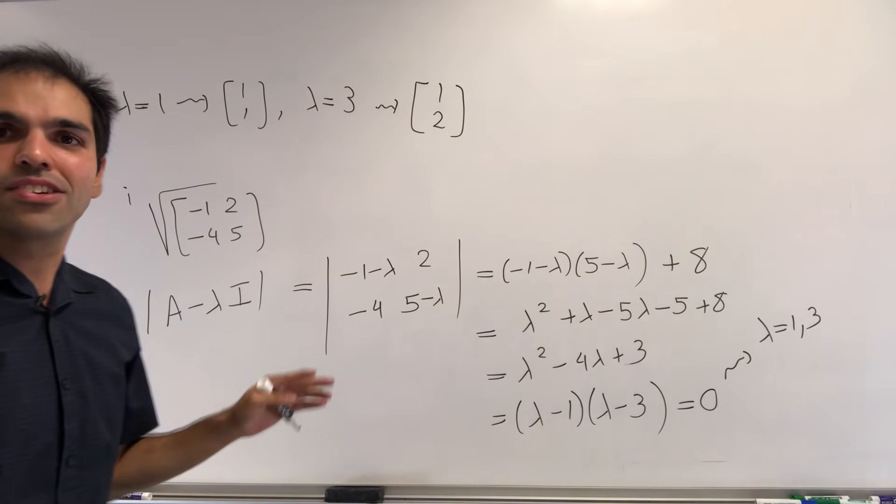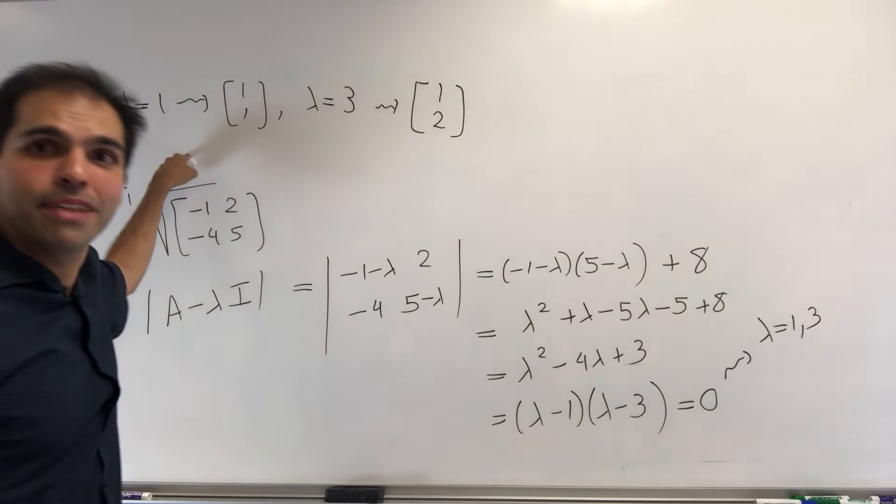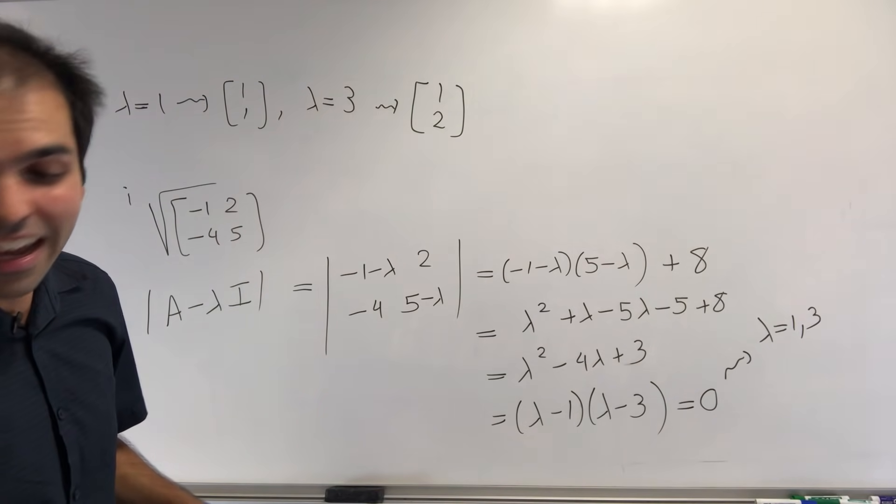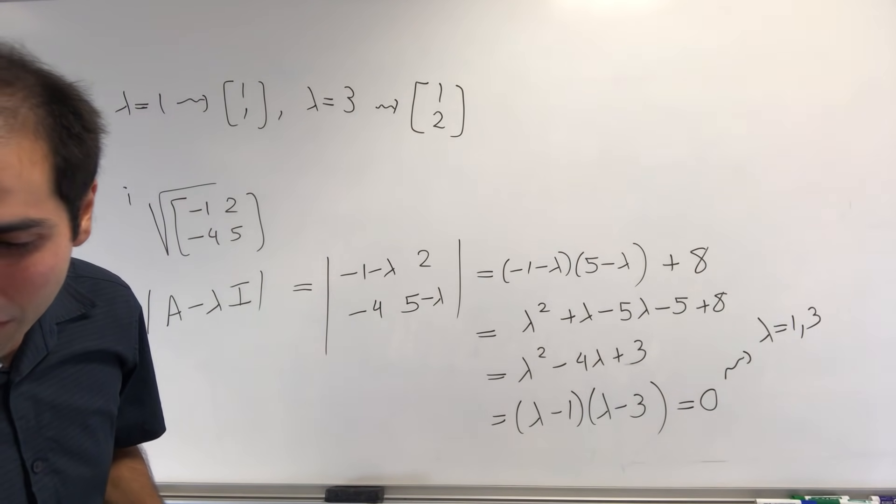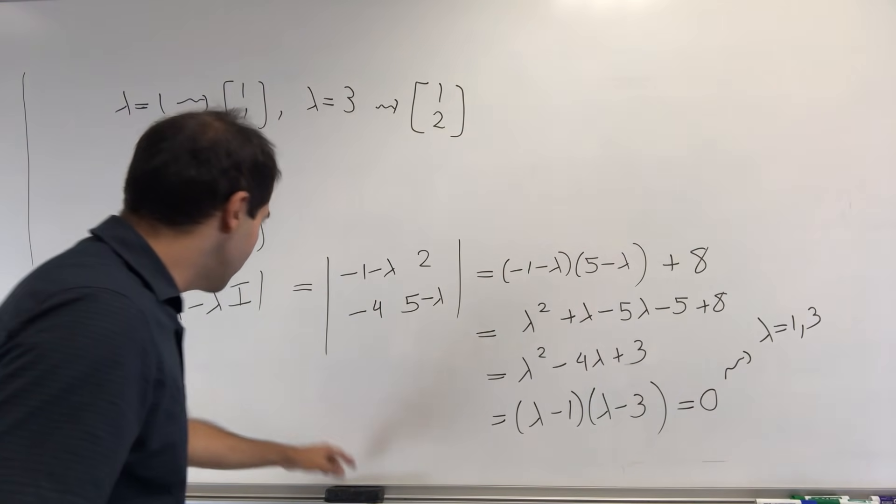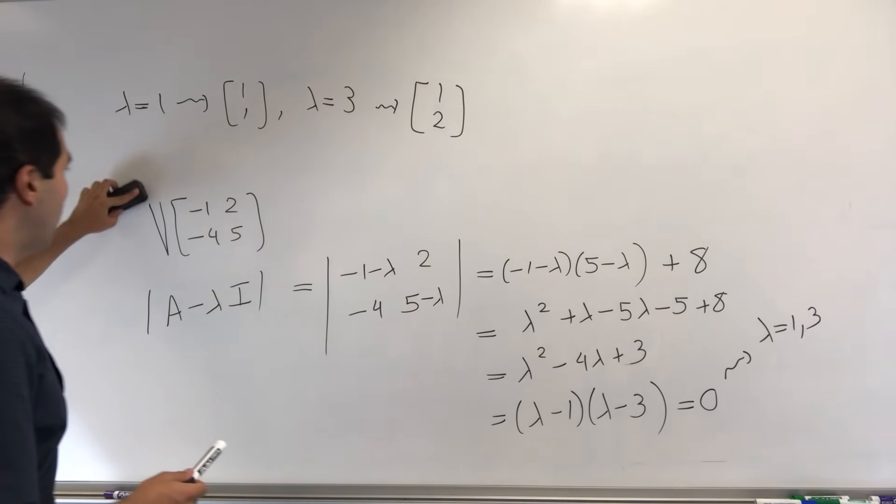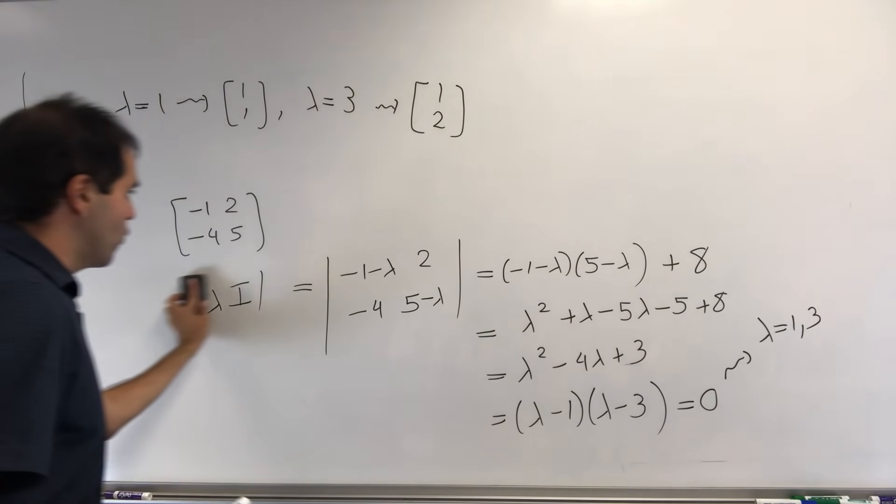Okay, I hope that's correct. If not, assume you have a matrix whose eigenvalues are 1 and 3, and whose eigenvectors are [1, 1] and [1, 2]. So what does that tell you about the matrix [-1, 2; -4, 5]?